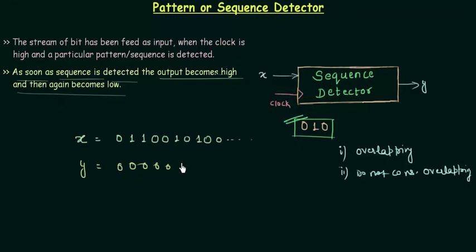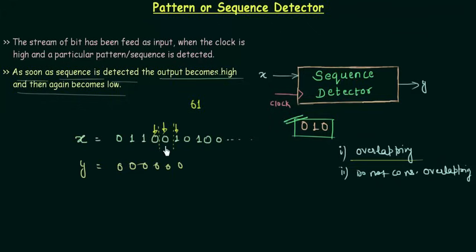Now there is the overlapping — let me explain. I detected this bit, then this bit, then this bit, then this bit. But I am not starting fresh from the next position. I am considering the previous 0 and 1 because I have already checked that 0 but I will reuse it to form the pattern. So I take this 0, then 1, then the next 0 — and in this way the output equals 1 because I have detected my pattern 0, 1, 0. The overlapping is involved here. If overlapping wasn't considered, I would have to start from the 1 after that checked 0.